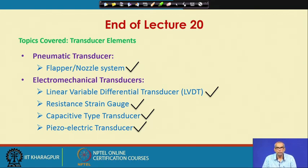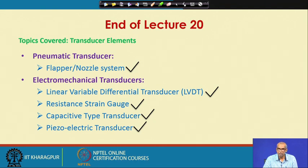This is the end of lecture 20. In this lecture we covered transducer elements as the major topic. Under transducer elements, we talked about pneumatic transducers and flapper nozzle systems, then various electromechanical transducers including LVDT, potentiometer, resistance strain gauge, capacitive type transducers, and piezoelectric transducers. This ends our discussion on transducer elements, and now you will be given assignments on transducer elements.